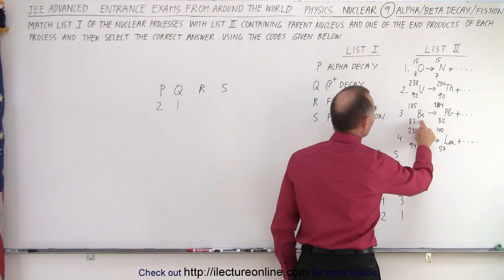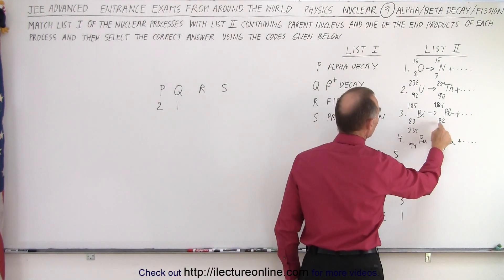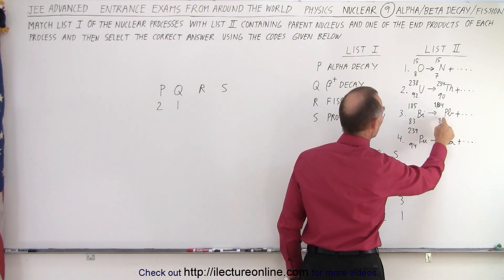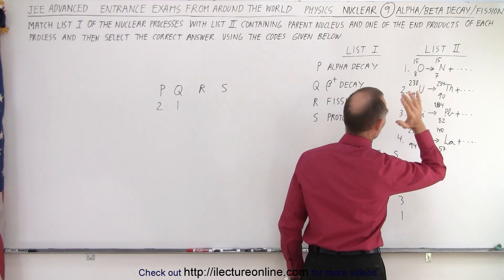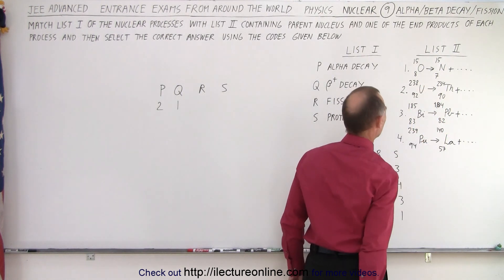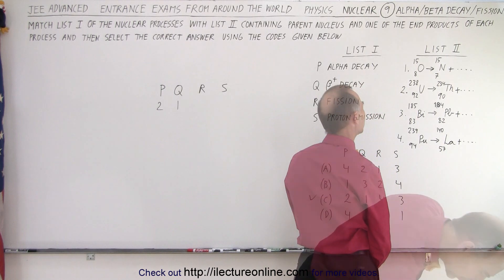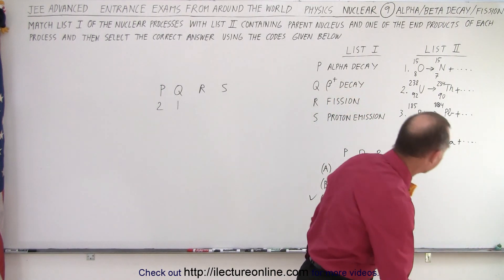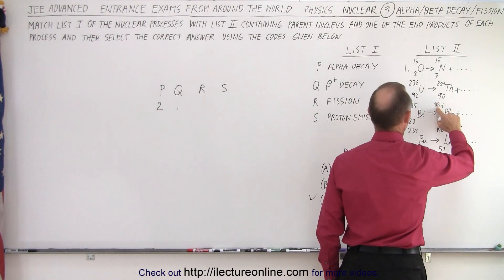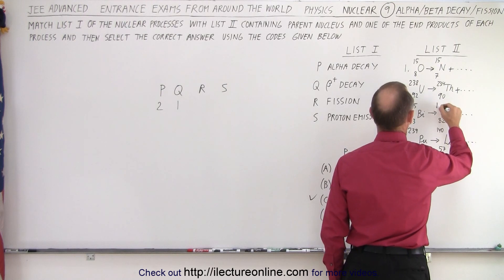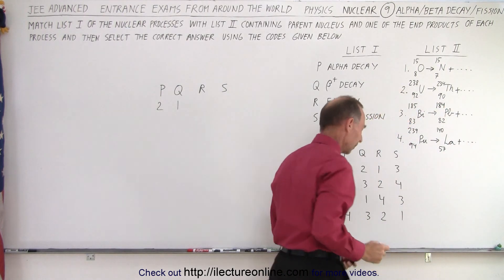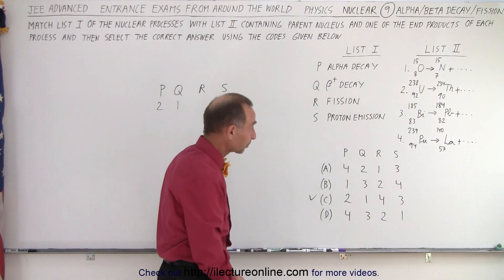We're going from bismuth to lead. Notice we're losing one proton. Oh, this is wrong. Oh, no, no, this is not wrong. Yes, this is wrong. Lead cannot be 104, can it? 104. 184. Ah, I was going to say something was wrong here. 184. All right, now we're better off.